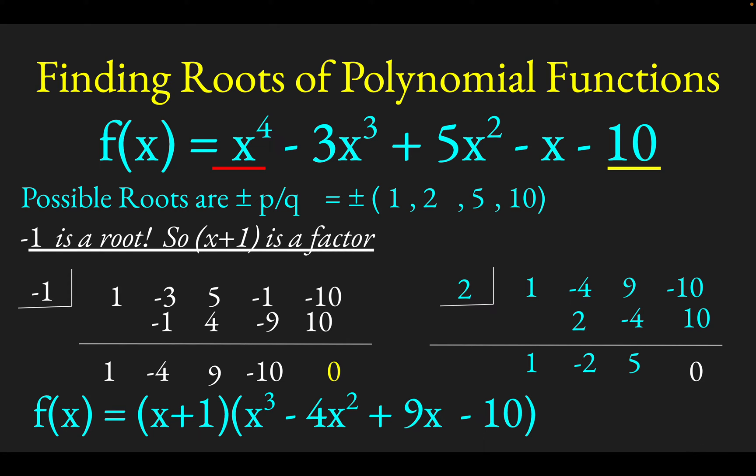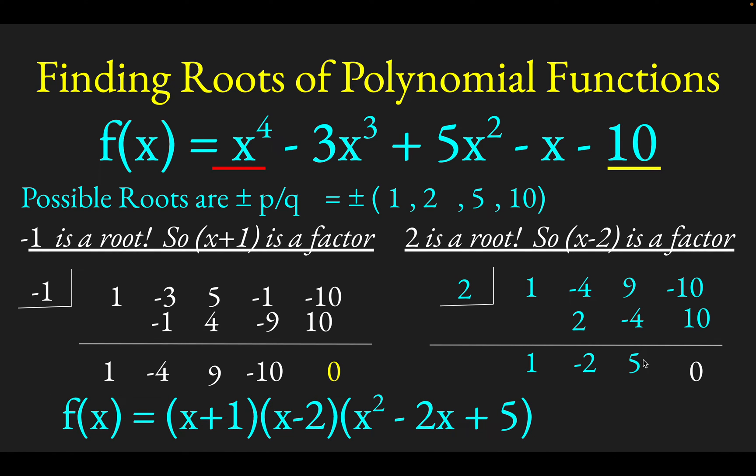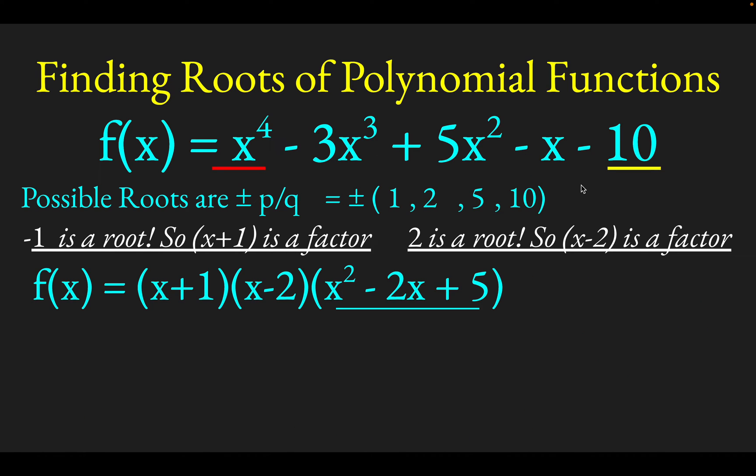So that means 2 is a root. So x minus 2 is a factor. We can pull both x plus 1 and x minus 2 out of this original polynomial, and what will be left over will be the coefficients of a quadratic now. When we pulled out the x plus 1 factor, we were left with a cubic, and now that we've also pulled out the x minus 2, we're down to a quadratic. If we can solve this quadratic, we'll have found all four of the roots to this fourth order polynomial.